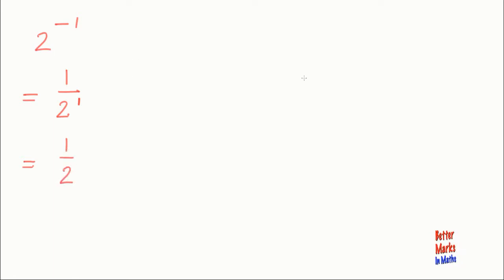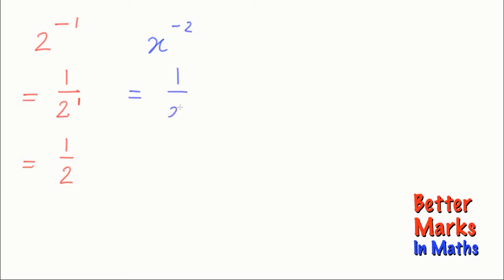Another example: if we have something like x to the negative 2, that is just a short way of writing 1 over x to the power 2, or 1 over x squared.